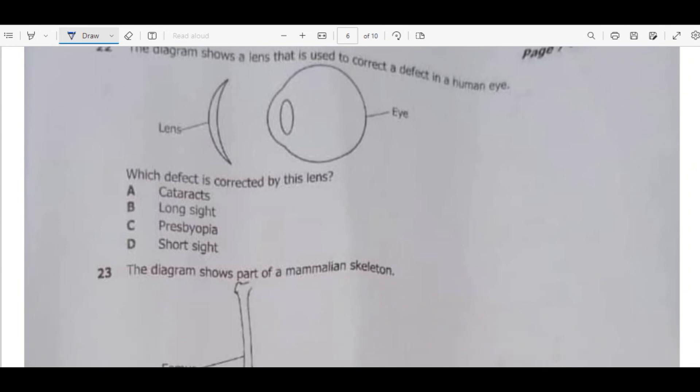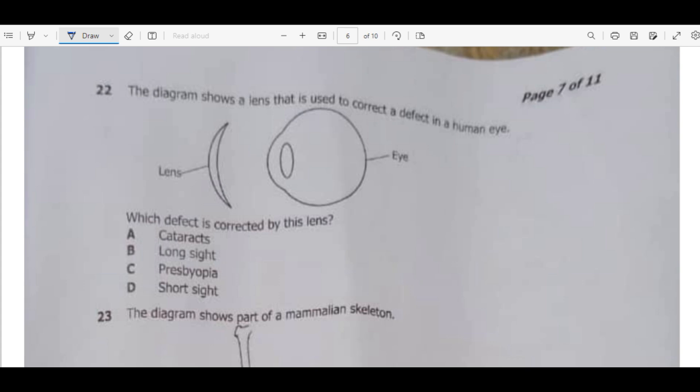We move on to question 22. The diagram shows a lens that is used to correct a defect in a human eye. For us to identify the type of defect which can be corrected by this lens, first we need to identify the type of the lens that we have. So how do you identify the type of the lens? You need to look at the structure of the particular lens. So in our case, we can see that the middle part of this lens is bigger than the tip here or the edges.